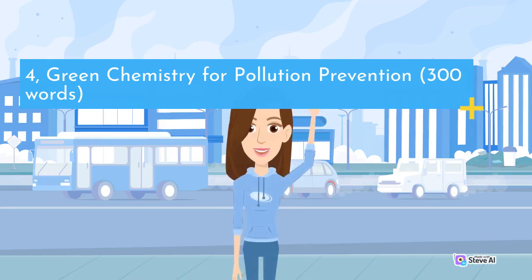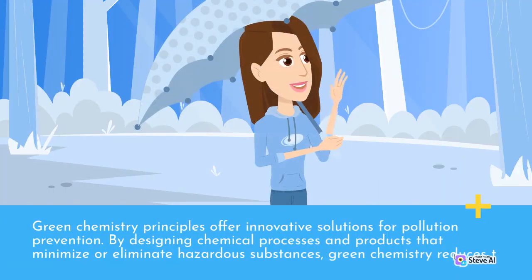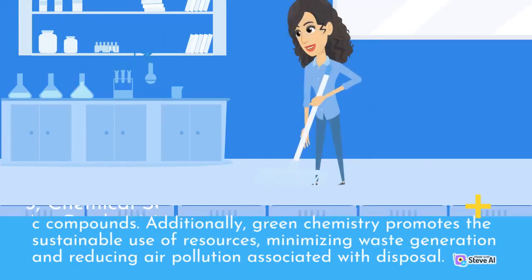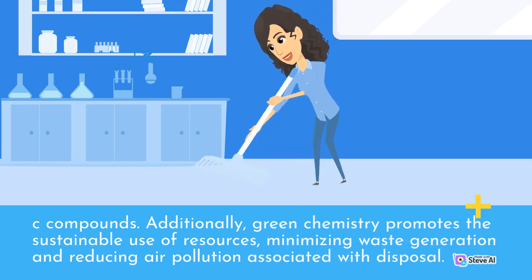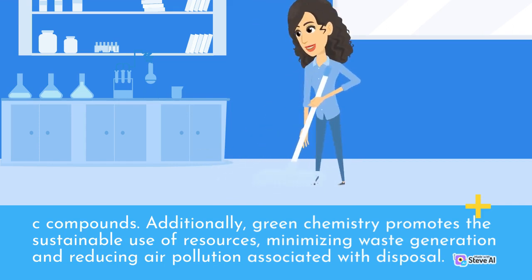Green Chemistry for Pollution Prevention. Green chemistry principles offer innovative solutions for pollution prevention. By designing chemical processes and products that minimize or eliminate hazardous substances, green chemistry reduces the environmental impact of various industrial activities. For example, the development of environmentally friendly solvents and biodegradable materials reduces air pollution caused by volatile organic compounds. Additionally, green chemistry promotes the sustainable use of resources, minimizing waste generation and reducing air pollution associated with disposal.